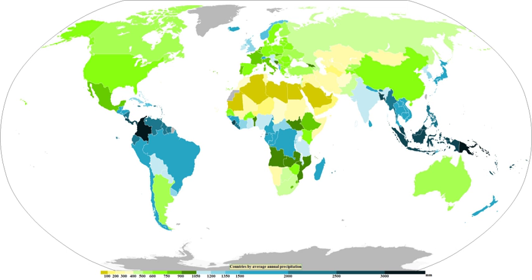Southwest of extratropical cyclones, curved cyclonic flow bringing cold air across relatively warm water bodies can lead to narrow lake-effect snow bands. Large water bodies such as lakes efficiently store heat, resulting in significant temperature differences larger than 13°C between the water surface and the air above. Because of this difference, warmth and moisture are transported upward, condensing into vertically oriented clouds which produce snow showers. The stronger the temperature decrease with height, the deeper the clouds get and the greater the precipitation rate. In mountainous areas, heavy snowfall accumulates when air is forced to ascend and squeeze out precipitation along windward slopes.